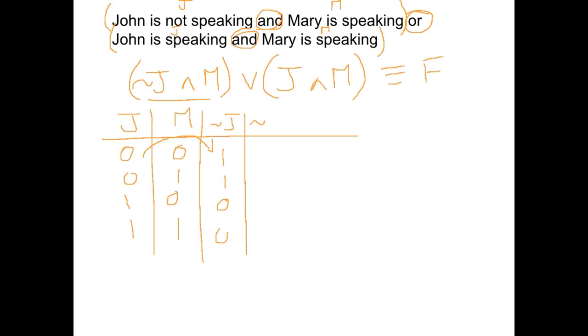Then I'm going to do my first set of brackets, which is not J and M. So I'm going to look at these two. And I'm anding the two together. They're only true when they're both true. So we've got false, true, false, false. Then I'm going to have the other set of brackets, which is J and M, which is these two. So anding, looking for them both to be true, which is only true in that last case.